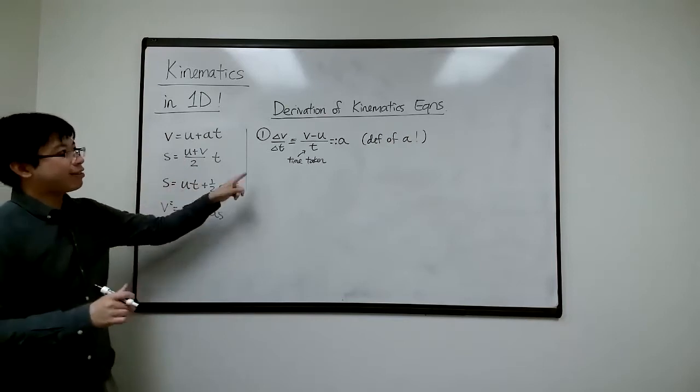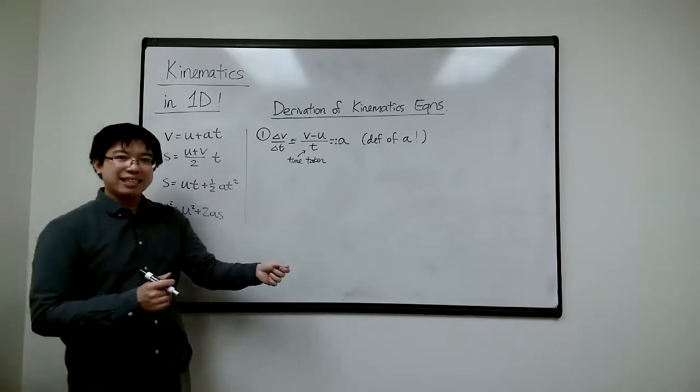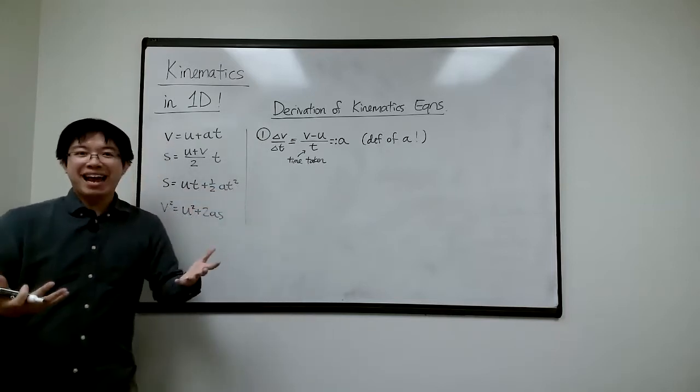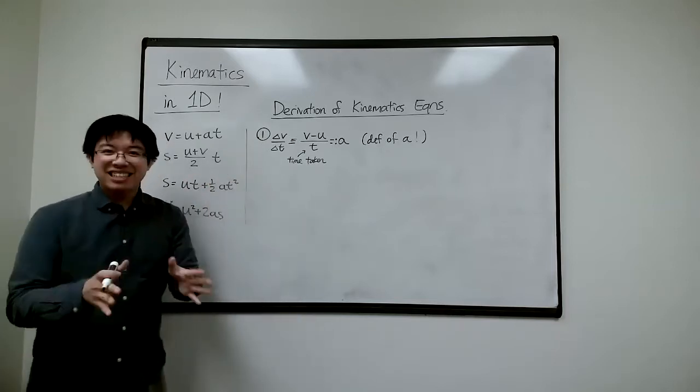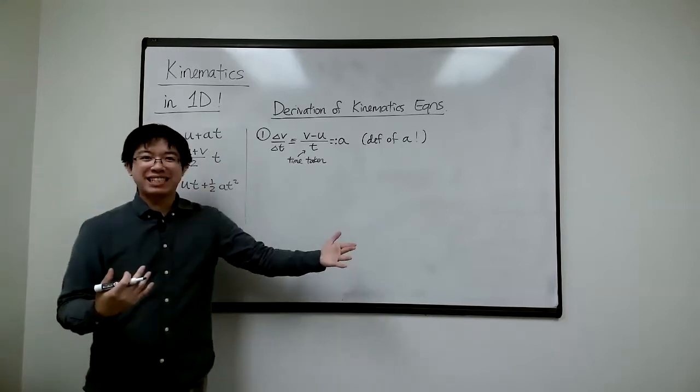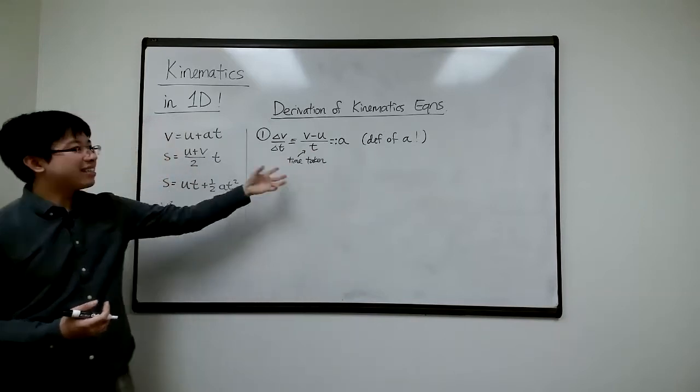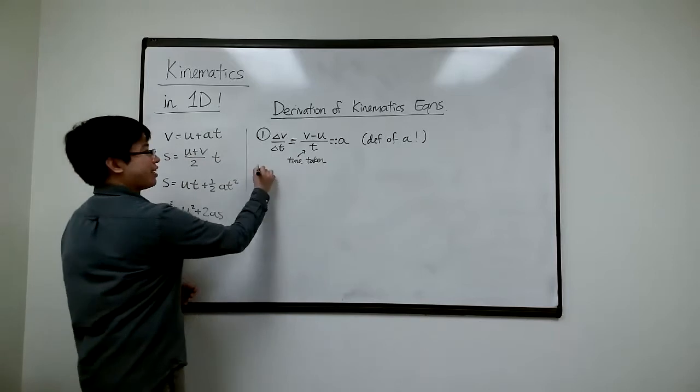And when acceleration is constant, the dV dT is the same as delta V delta T, the instantaneous. In other words, in normal human language, that means the instantaneous acceleration is the same as the average acceleration because acceleration is constant. So at every instant is the same. So there's only one acceleration and that is it, done.